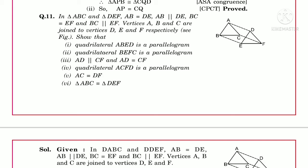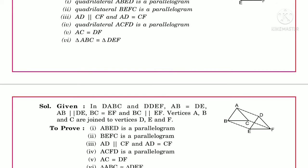For this, first we draw two triangles ABC and DEF, then we join A to D, B to E, and C to F. As already mentioned in the question, AB equals DE and AB is parallel to DE.